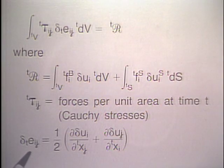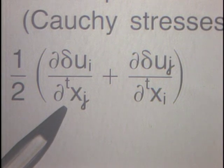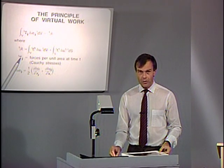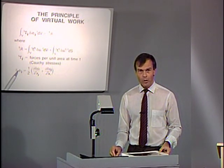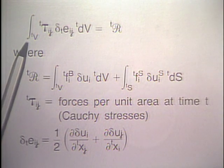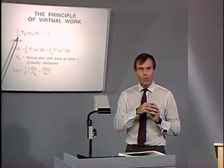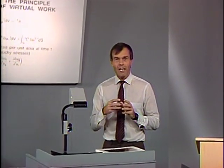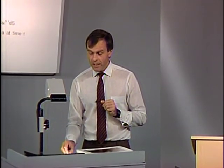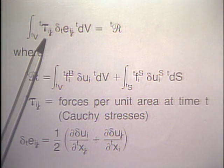The virtual strain is referred to the current geometry, the coordinates at time t. Stress at time t times virtual strain at time t gives us the total internal virtual work when we integrate over the current volume. If we have a body undergoing large displacements, large rotations, and large strains, then this is the internal virtual work with the current stresses at time t in the configuration at time t.